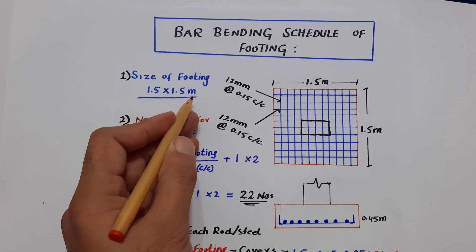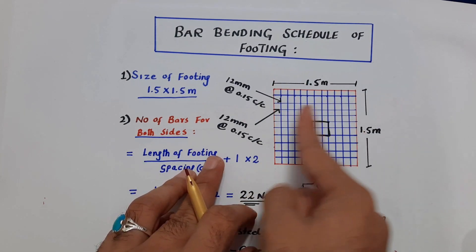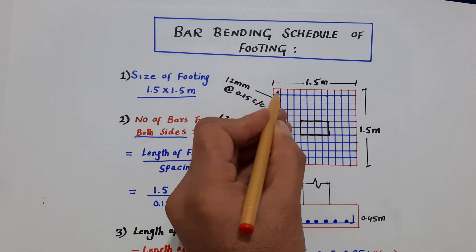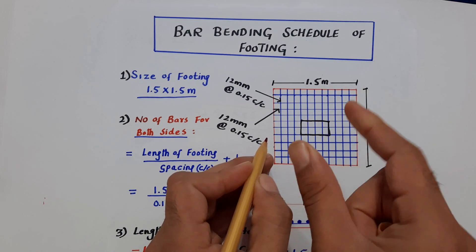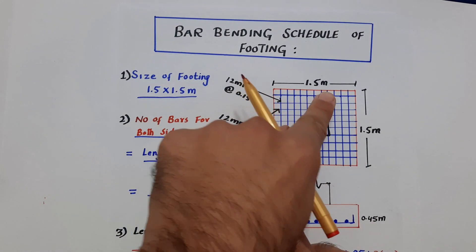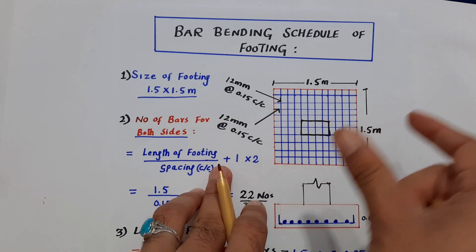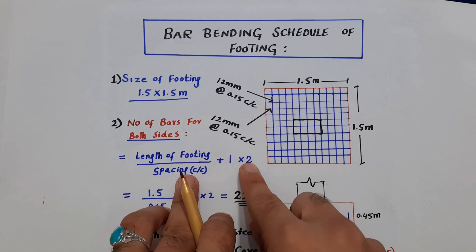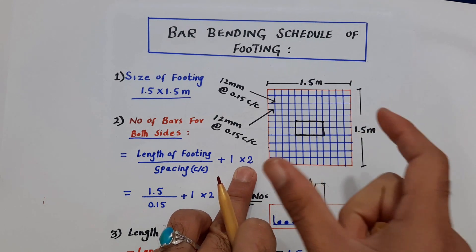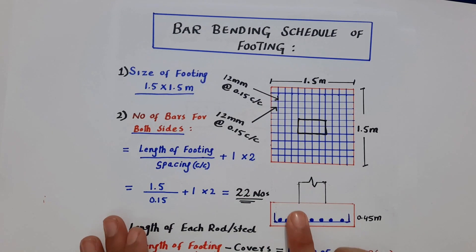Now I need to find the total number of steel rods for both sides. The formula is: length of footing divided by spacing, plus 1, multiplied by 2. We multiply by 2 because this is a square footing. For a rectangular footing, you would find the number of rods for each side separately.